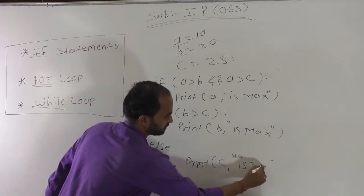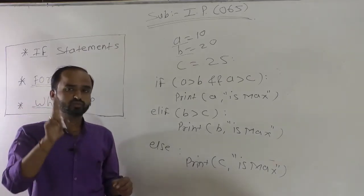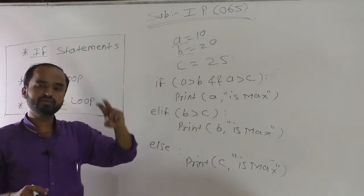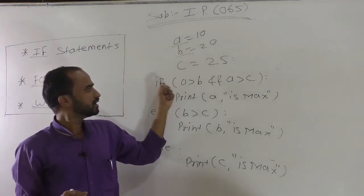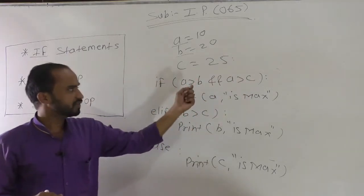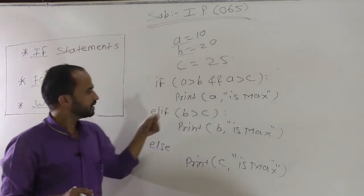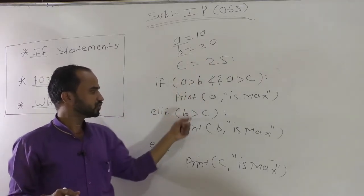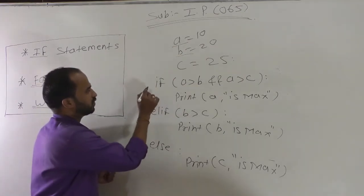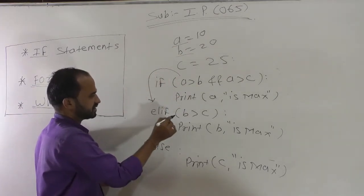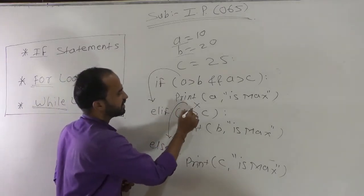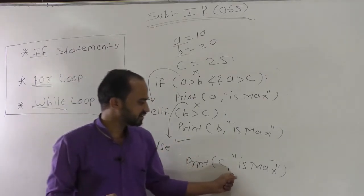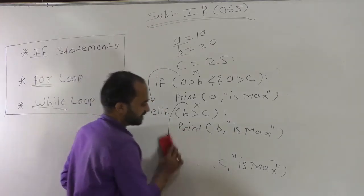In the last example there was one condition, so we used only if and else. Now there are three variables and we want to check two conditions, so we use if, elif, and else. If 'a is greater than b and a is greater than c' is true, a is max. Elif 'b is greater than c' — b contains 20 and c is 25, so this is also false. The flow of control then reaches else, and it prints 'c is max'.